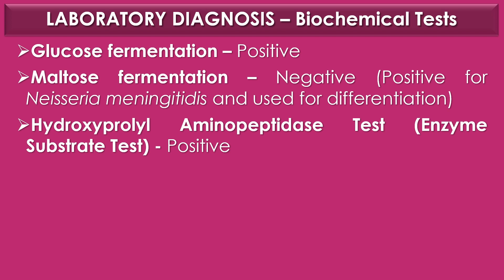Glucose fermentation is positive. Maltose fermentation is negative. The maltose fermentation test is only positive for Neisseria meningitidis and is used for the differentiation of meningococci from gonococci, Neisseria gonorrhoeae. Finally, the hydroxyproline aminopeptidase test or enzyme substrate test shows a positive reaction for gonococci or Neisseria gonorrhoeae.